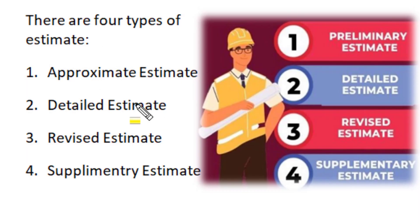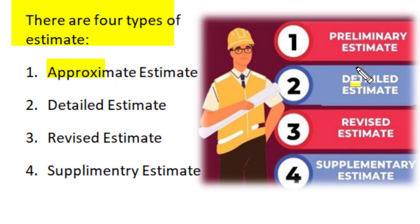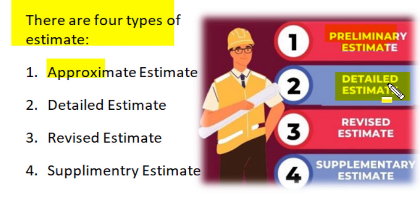Mainly for a project, there are four types of estimates: one is approximate, rough, or preliminary estimate; the second is detailed estimate; and sometimes we have to make revised estimation or supplementary estimation.